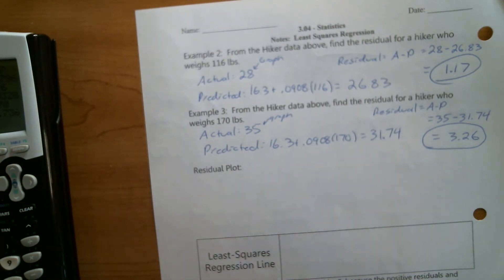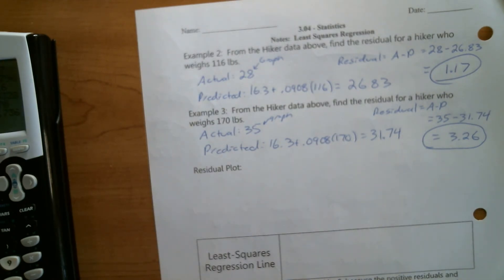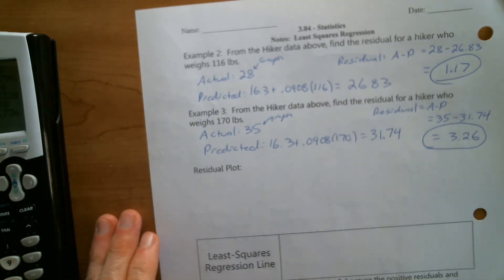We're finding how far off each prediction was from the actual value. We need a way to evaluate whether our equation is any good — we can always produce an equation, but we need to measure if it's done a good job and is something worth using for real-world decisions. Residuals are our way to start analyzing that. One way we do this is by making a residual plot, where we take all the residuals from our data set and plot them on a single graph.